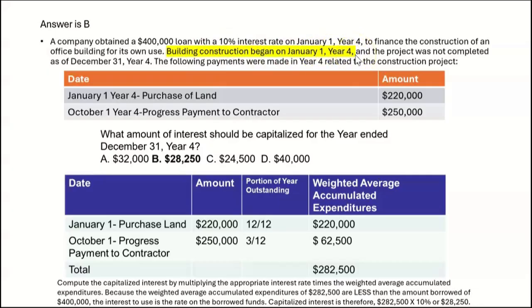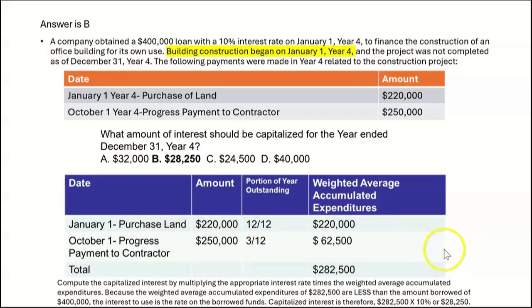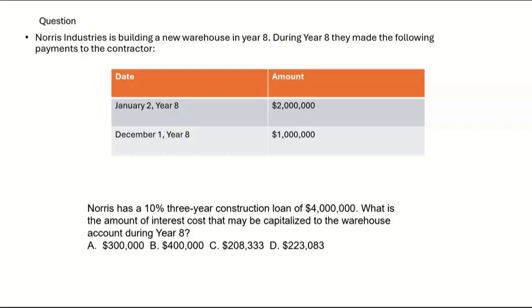Building construction began January 1st, year four, so from that day forward we have accumulated expenditures for purposes of capitalizing interest. But not all accumulated expenditures are created equal — the one made January 1st is outstanding for the whole year, but the payment made October 1st is only outstanding for three months. That's why we added $220,000 to $62,500 to get $282,500, then multiplied by 10%.